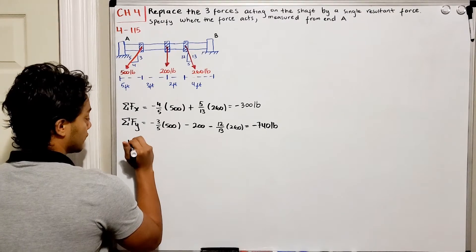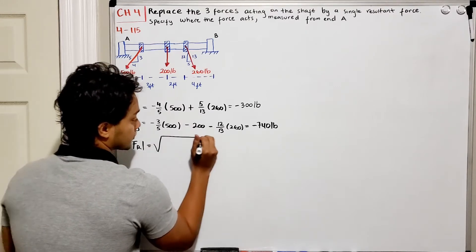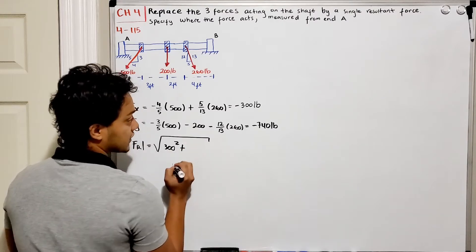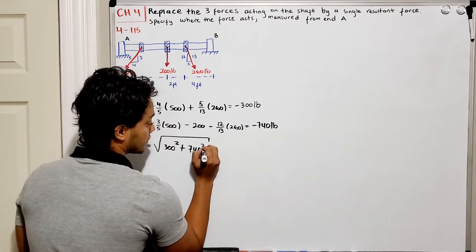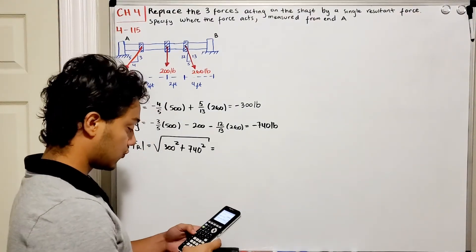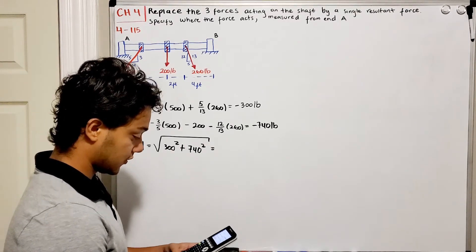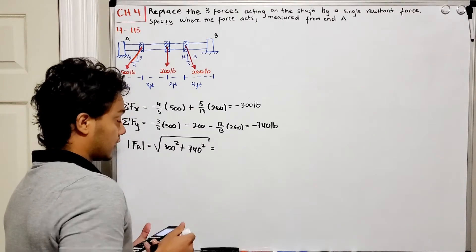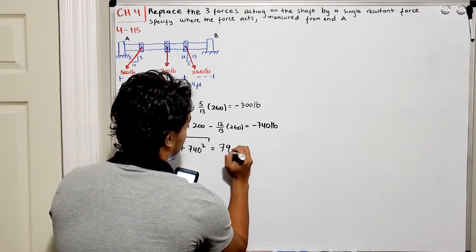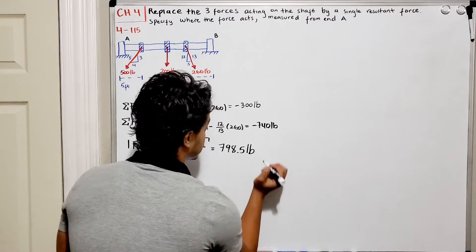To find the magnitude of the resultant force F_R, we take the square root of 300 squared plus 740 squared, which equals 798.5 pounds.